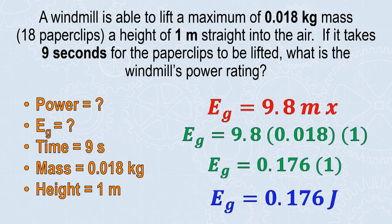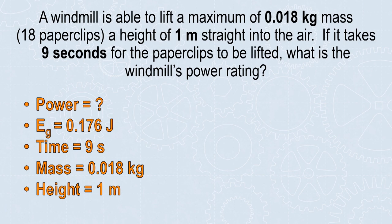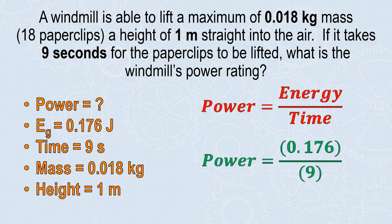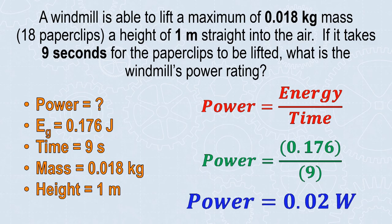Once you have the energy, you can find the power. We know that power is energy divided by time. In this case, we have gravitational potential energy. I'm going to plug in my energy and my time. A quick calculation gives me a power rating of 0.02 watts.